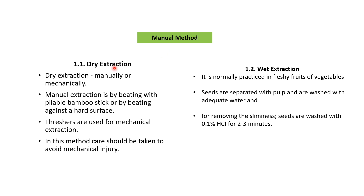Manual methods can be practiced for both dry and wet extraction. Dry extraction can be done manually by beating with a pliable bamboo stick or against a hard surface, or mechanically with a thresher — though mechanical threshing carries risk of injury. For wet extraction, practiced with fleshy fruit vegetables, seeds attached with a slimy layer of pulp are separated using 0.1% HCl treatment for two to three minutes.